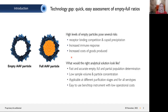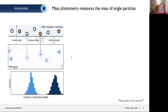What would an ideal analytical solution look like to solve this problem? It should be fast and accurate in determining the empty, full, and partial populations. It should use very low sample volume and particle concentrations, be applicable at different purification stages and for all serotypes. And lastly, it must be easy to use — ideally a benchtop instrument with low operational costs. We believe at Refine that mass photometry can solve this technology gap.